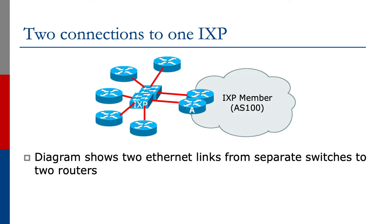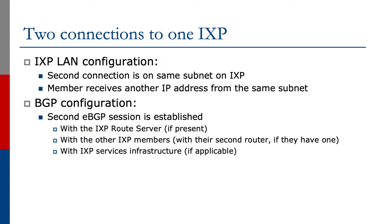So how do we configure BGP and the traffic engineering for two connections to this IX? The diagram shows the two ethernet links from separate switches to the two routers in the IXP member, AS100. The second connection for the IXP LAN is on the same subnet as the IXP. This is quite common in many internet exchange points, where quite often the exchange point would assign two or three IP addresses from the one subnet to each member.